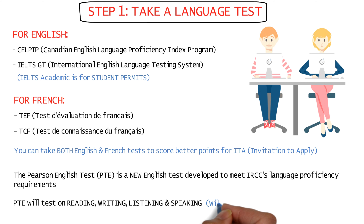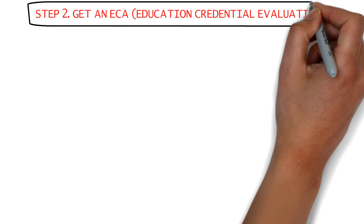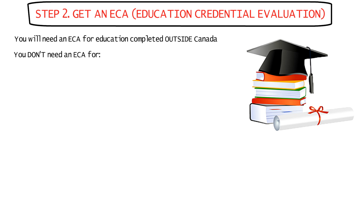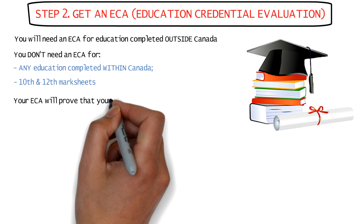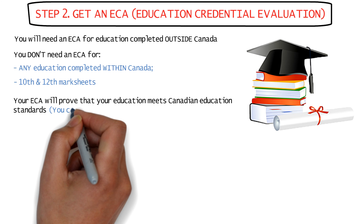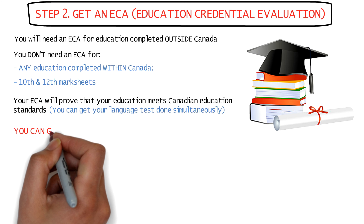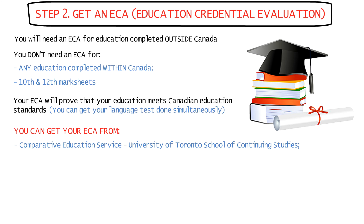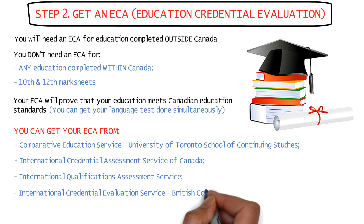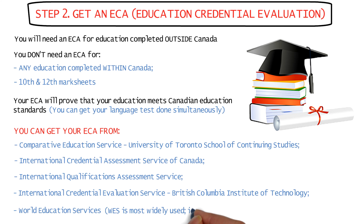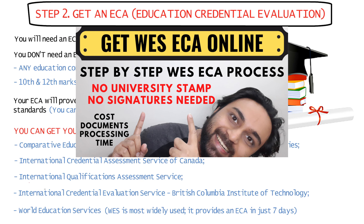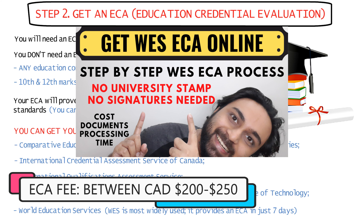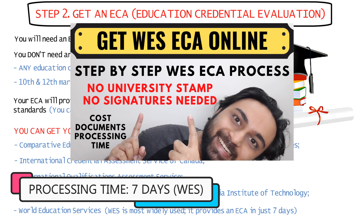Kindly note that IRCC will begin to accept PTE test results only by late 2023. The next step is getting your ECA or Education Credential Assessment for the education you've completed outside Canada. You don't need an ECA for any study course completed in Canada or for your 10th and 12th grade mark sheets. The whole point of getting an ECA is to prove that your education meets Canadian education standards, and this step can be completed at the same time as getting your language tests done. You can get your ECA from designated organizations like CES, ICAS, IQAS, ICES, and WES. WES is the most widely used organization and also provides the fastest ECA. The fee is between 200 to 250 Canadian dollars and the processing time is as quick as seven days for WES.